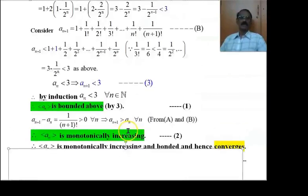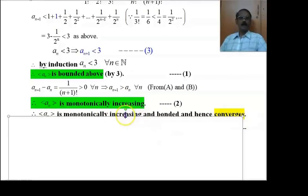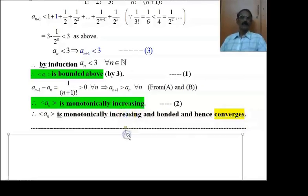Thus, aₙ is bounded above and monotonically increasing. As we know, a sequence which is monotonically increasing and bounded above converges. Therefore, the sequence is convergent.